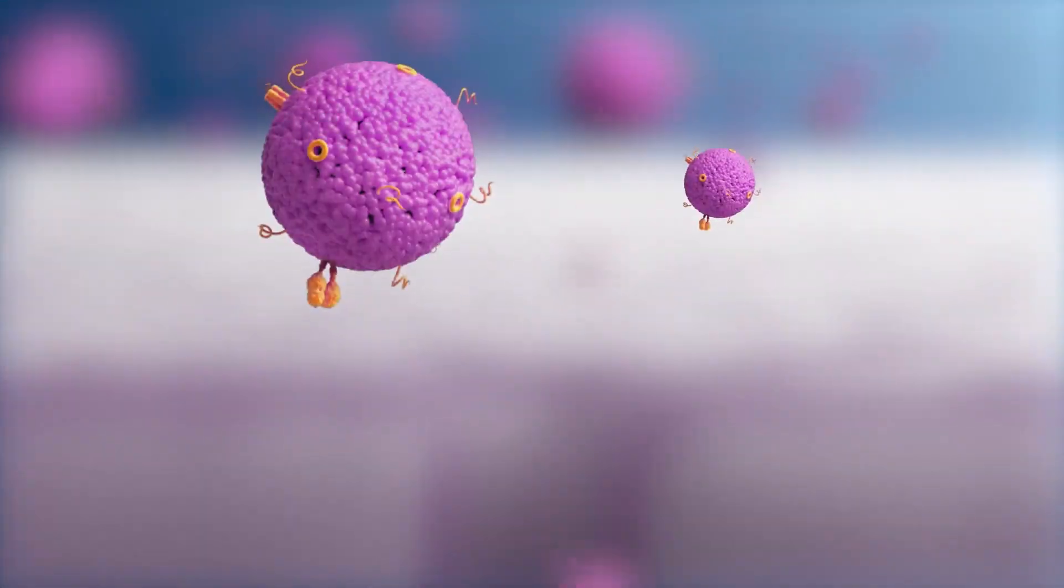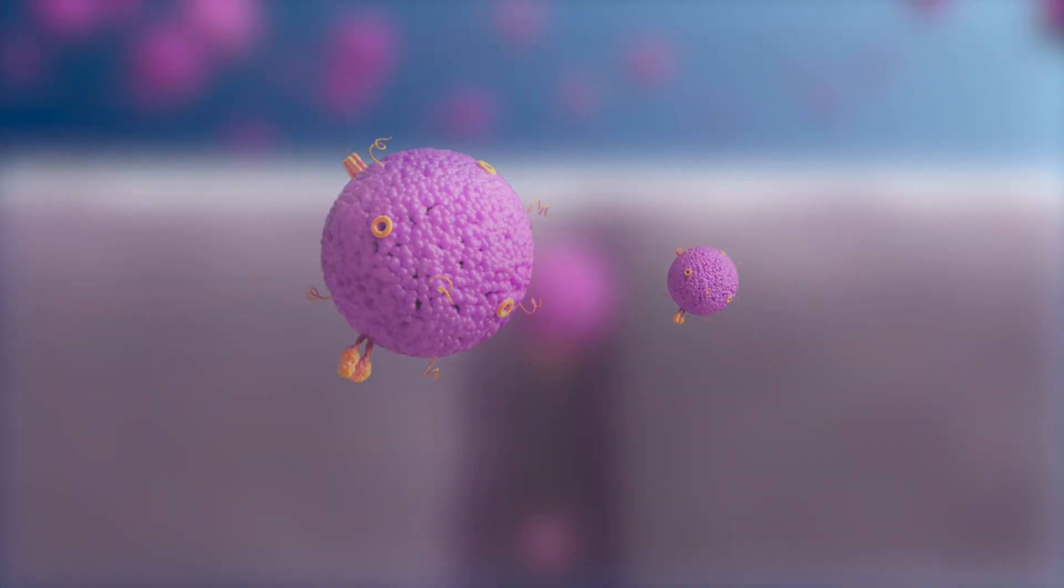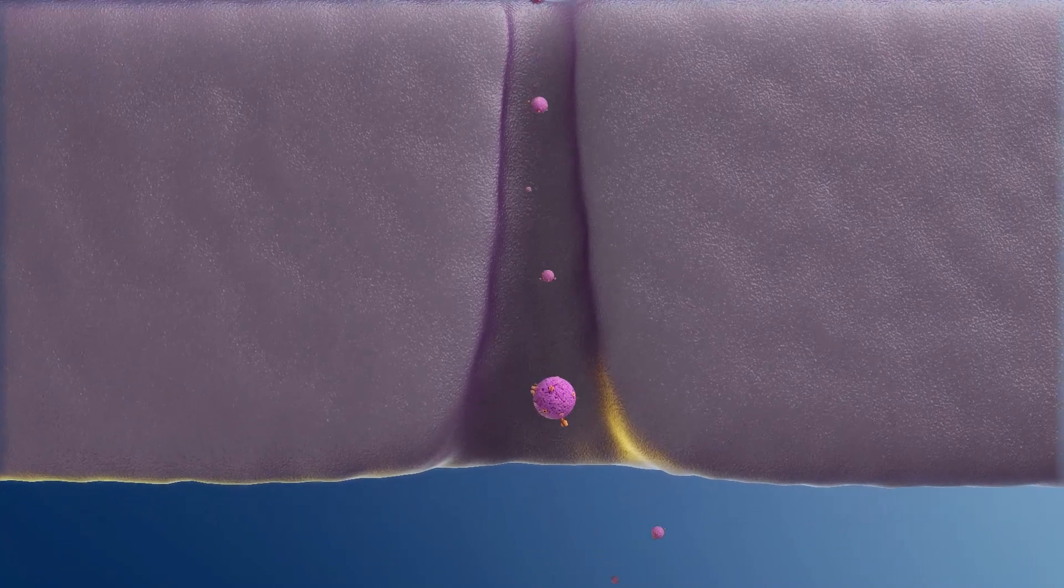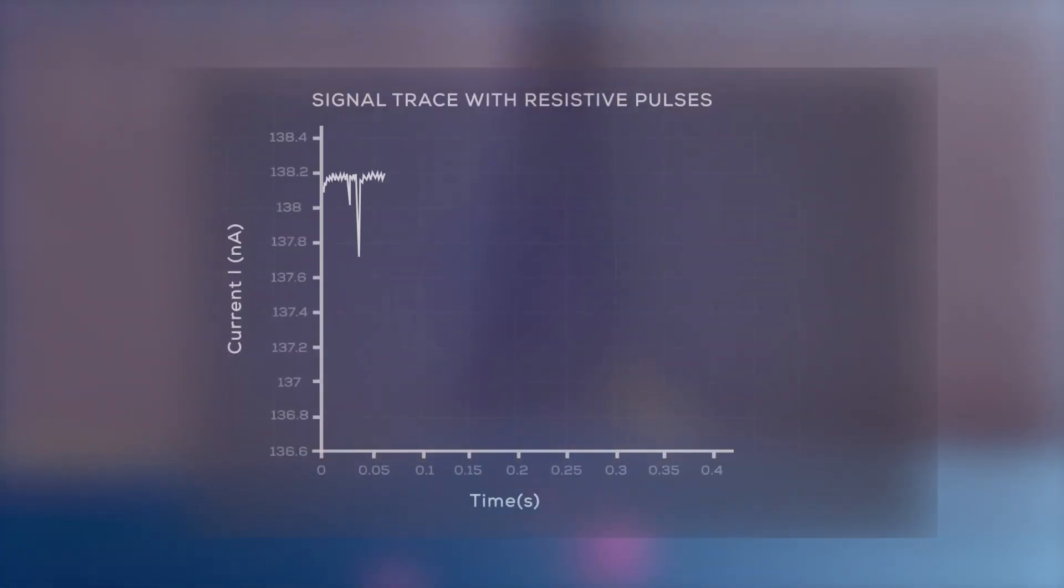TRPS measures particles from 50 nanometers to 20 microns as they pass through a tunable nanopore. When particles cross the pore, they block the flow of current, resulting in a blockade signal.